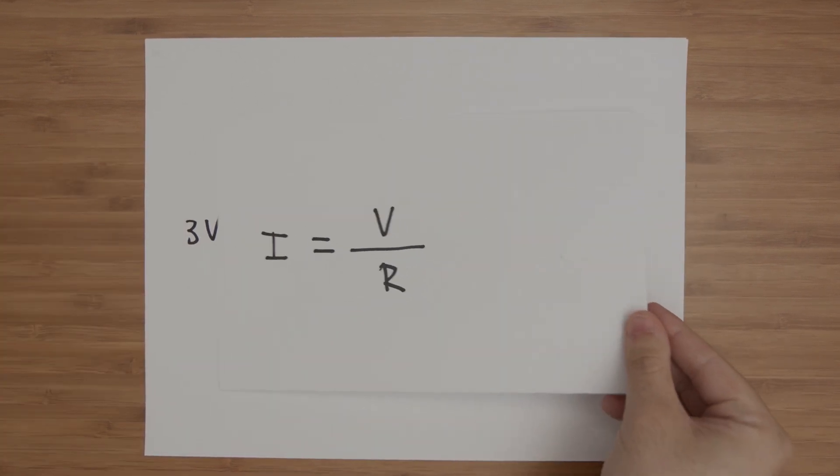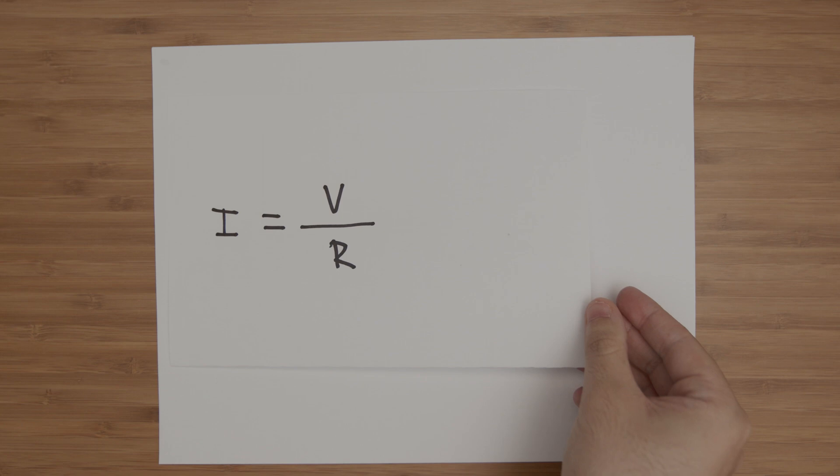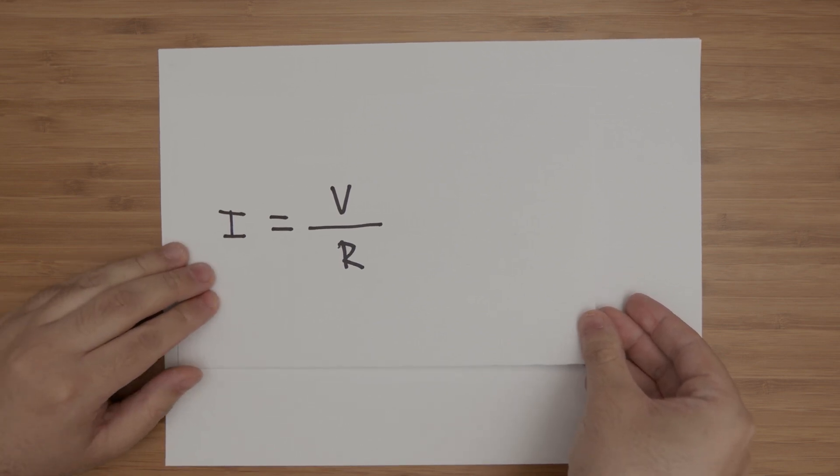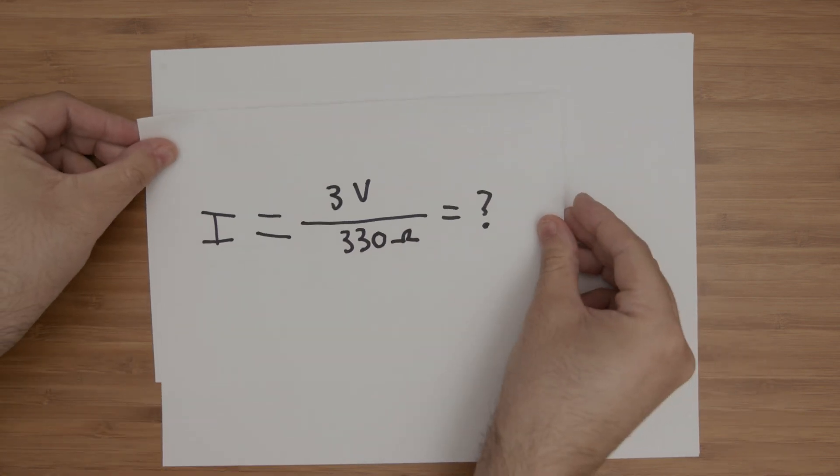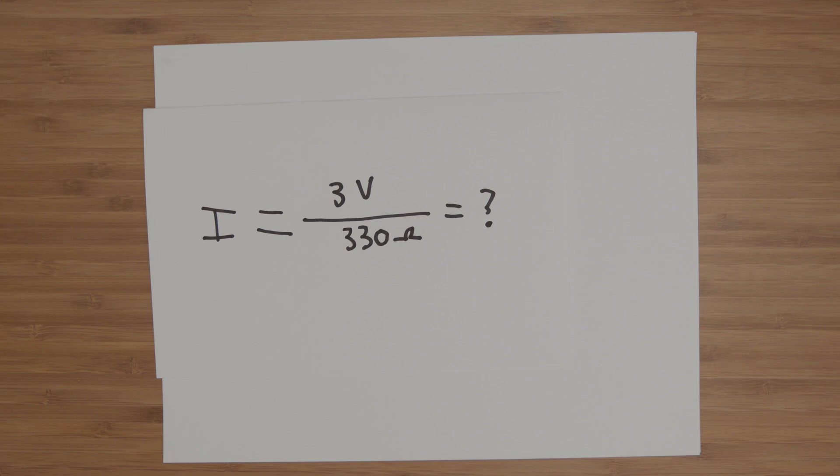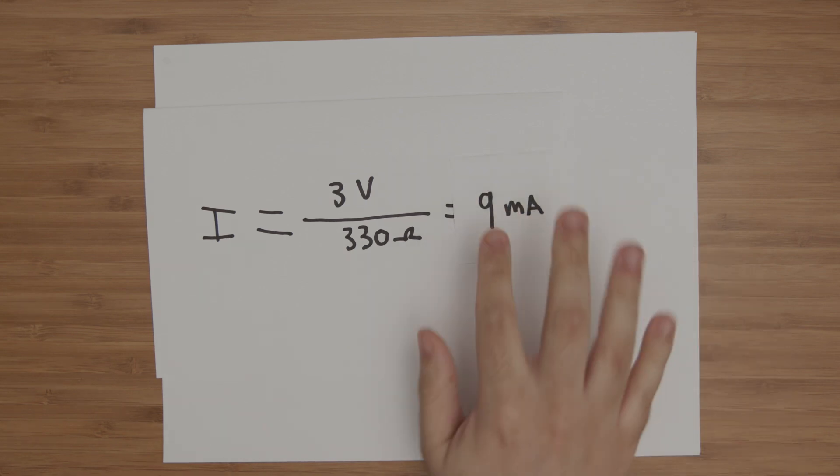Since we want to know what the current is, we will use the formula current equals voltage divided by resistance. We then simply need to fill in the values and plug them into the calculator to get our final result of 9 milliamps.